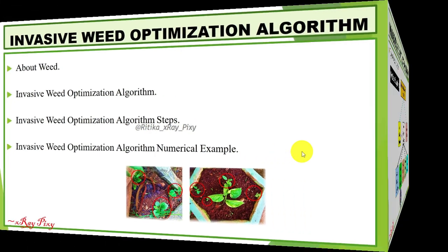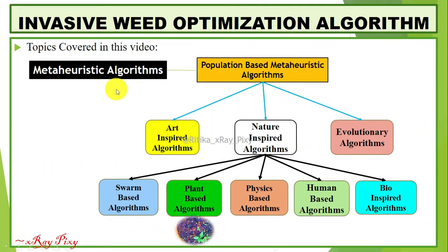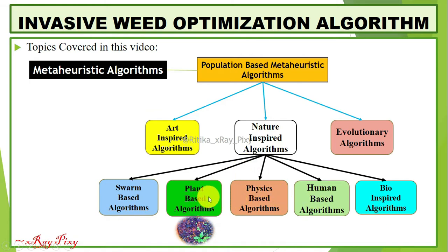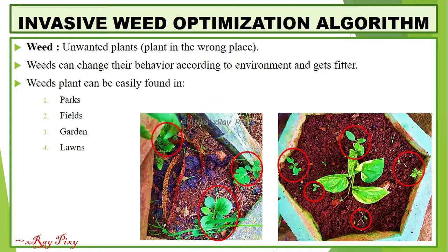Meta-heuristic algorithms are divided into two categories: single-based and population-based. Population-based meta-heuristic algorithms are further divided into different categories. Nature-inspired algorithms are further subdivided, and here you can see plant-based algorithms. Invasive Weed Optimization is a plant-based algorithm inspired by nature and is a population-based meta-heuristic algorithm.